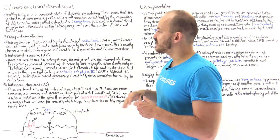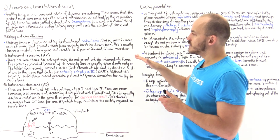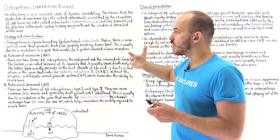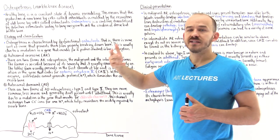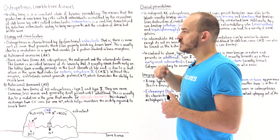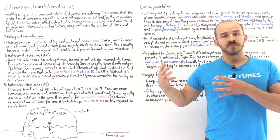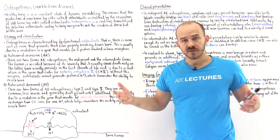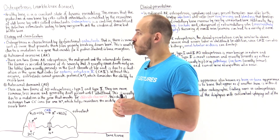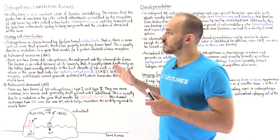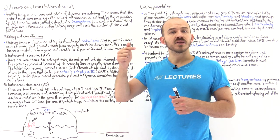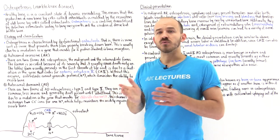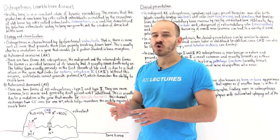Osteopetrosis is characterized by dysfunctional osteoclasts — there is some sort of problem that prevents the process of resorption, the breaking down of bone. This is usually due to a genetic mutation in an enzyme or protein involved in the process of resorption. We classify osteopetrosis based on the mode of transmission: autosomal recessive and autosomal dominant.